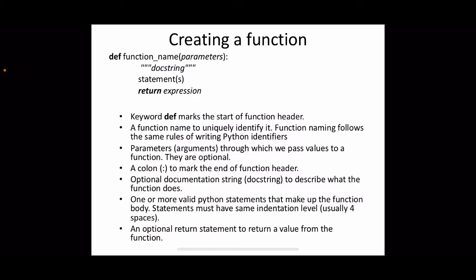Let's see how a user-defined function can be defined and used in a program. The syntax for creating a function starts with the keyword 'def' — short for define — followed by a function name, optional parameters in parentheses, and a colon marking the end of the function header. The body starts with an indentation, and optionally we have a docstring — a document string enclosed in triple quotes that carries information about the function. Following the docstring, we have the function body statements, and finally an optional return statement.